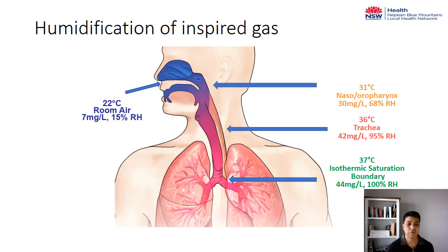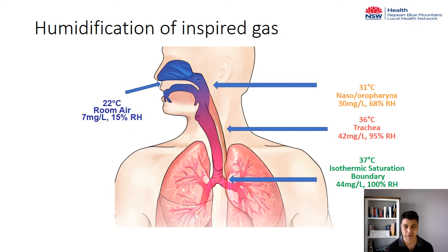Once the air reaches the carina, which is almost body temperature at 37 degrees, the moisture content is fully saturated — the air is fully saturated. So at 37 degrees in our carina, the humidification is about 100%. Now we understand how our upper respiratory tract provides humidification; let's have an understanding of how it actually does that.